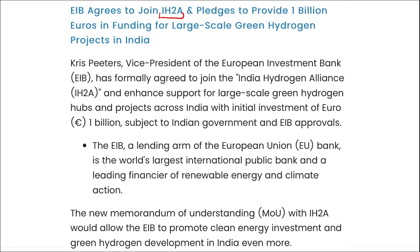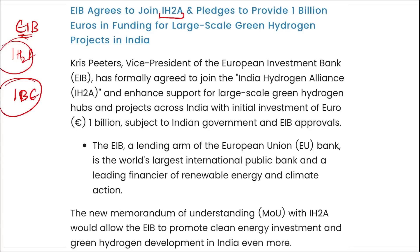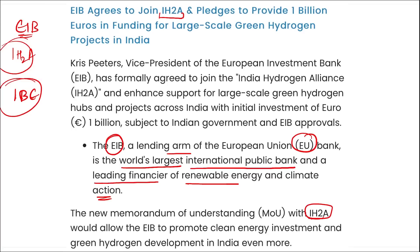Next: EIB agrees to join IH2A — the India Hydrogen Alliance. The European Investment Bank has agreed to join the Indian Hydrogen Alliance to enhance support for large-scale green hydrogen hubs and projects across India. EIB will be investing 1 billion euros in hydrogen projects to be developed in India. EIB is the lending arm of the European Union and is the world's largest international public sector bank, as well as a leading financier for renewable energy and climate action. The new MOU with IH2A would allow EIB to promote clean energy investment and green hydrogen development in India.